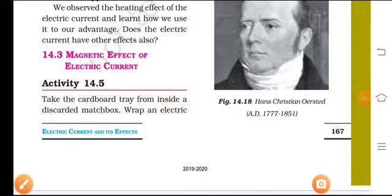Okay good morning everyone. We will explain word by word and discuss magnetic effect of electric current from NCERT book of class 7. Here is activity 14.5.